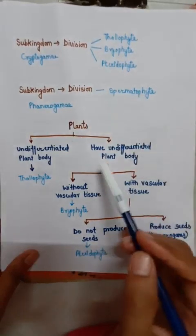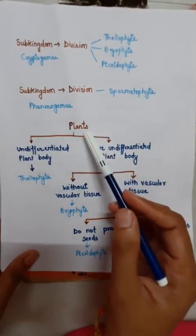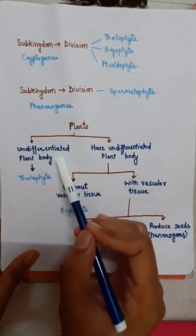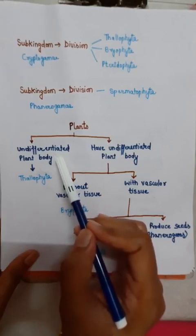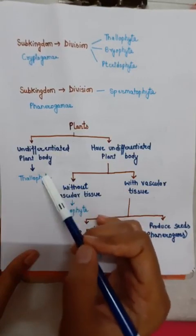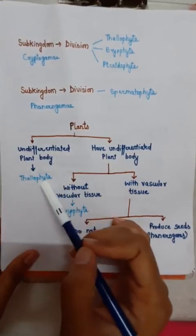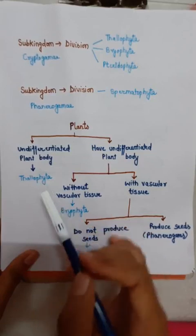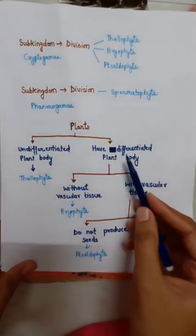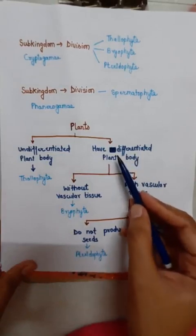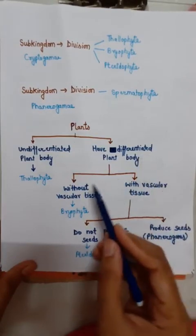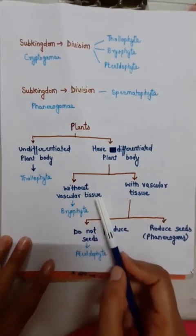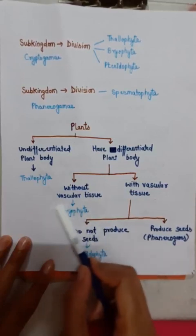Plants are classified into two parts based on body organization. First are plants with an undifferentiated body — meaning no distinct root, stem, and leaf division. Thallophyta falls under undifferentiated plants. Plants with a differentiated body have distinct leaf, stem, and root. These are further divided into those without vascular tissue and those with vascular tissue. Bryophyta falls under plants without vascular tissue — absent xylem and phloem.